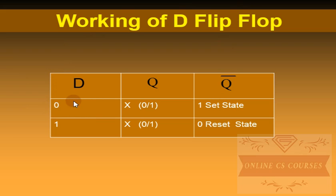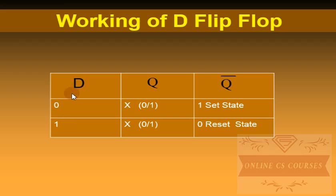So we have two values of D. If D is 0, whatever the current Q value is — whether it is 0 or 1 — if D is 0 it means R (reset state) is 0, so S is equal to 1 because D complement is 1. So set state is 1, meaning the flip flop will be in the set state, and set 1 represents the set state.